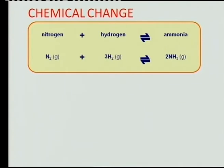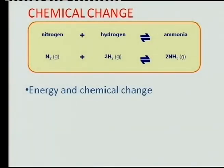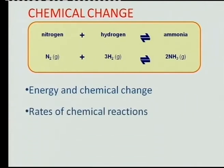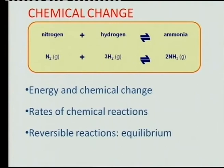If you watch carefully on the screen, you'll notice that the topic is chemical change, which normally in the examination has four subsections. The first is energy and chemical change — where we'll focus today. The second is rates of chemical reactions, the third is reversible reactions or equilibrium, and the fourth is electrochemical reactions. That section on chemical change normally accounts for up to 75 marks in the final examination.